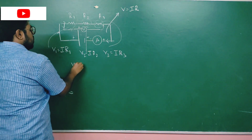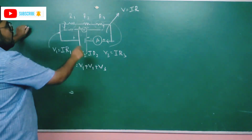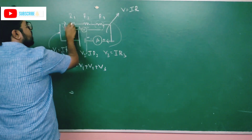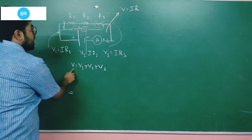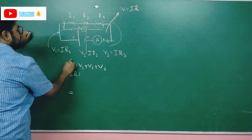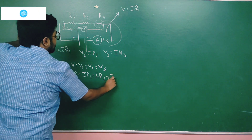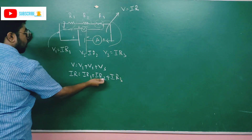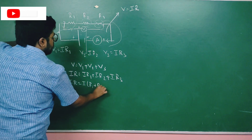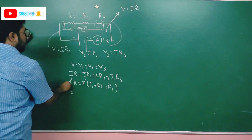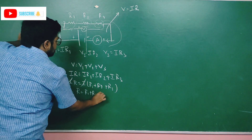The voltage is divided: V1 plus V2 plus V3 — so it divides the voltage. V equals I times R1, V2 equals I times R2. Taking I as the common factor, what remains is R1 plus R2 plus R3. So the total resistance in a series connection is R1 plus R2 plus R3.